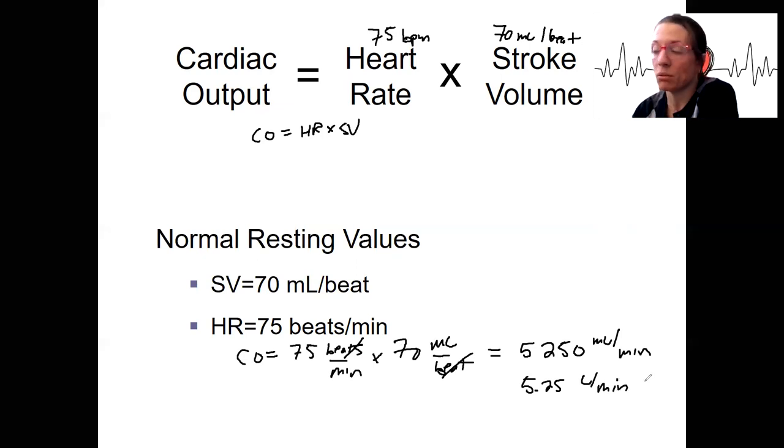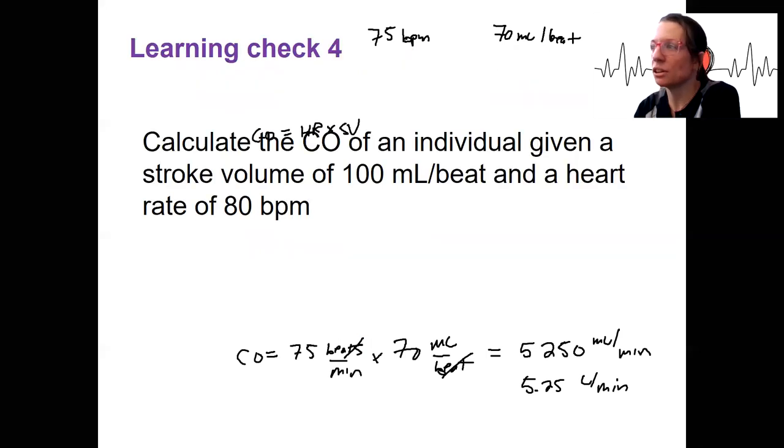That's what your heart is pumping at rest: over five liters of blood in a single minute. Pretty cool. When you exercise, that can increase by four to nine times, depending on your fitness level. Nine times that is like 45 liters per minute. Crazy. Okay, do a learning check here.